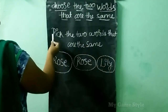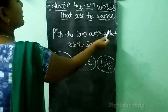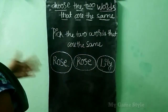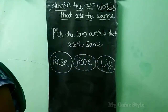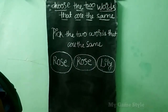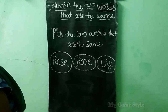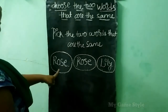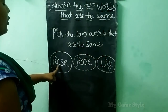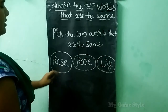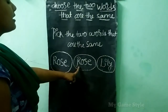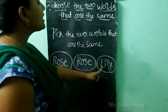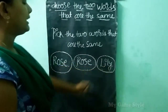Here, pick the two words that are the same. We have given some words children. So we need to identify same words. What are those? Let's see. This is R-O-S-E, Rose. And this is R-O-S-E, Rose. Here it is L-I-L-Y, Lily.